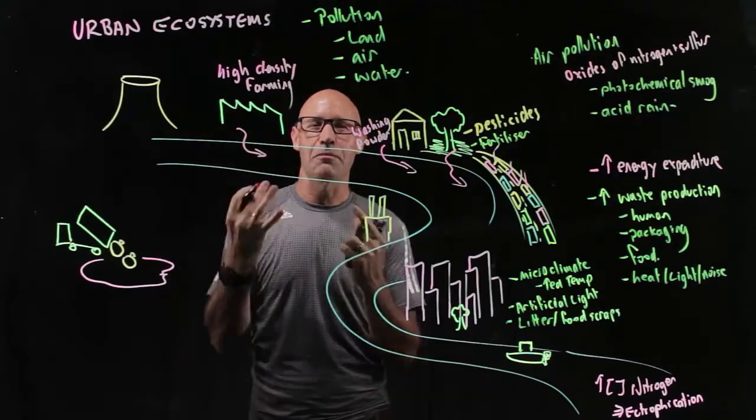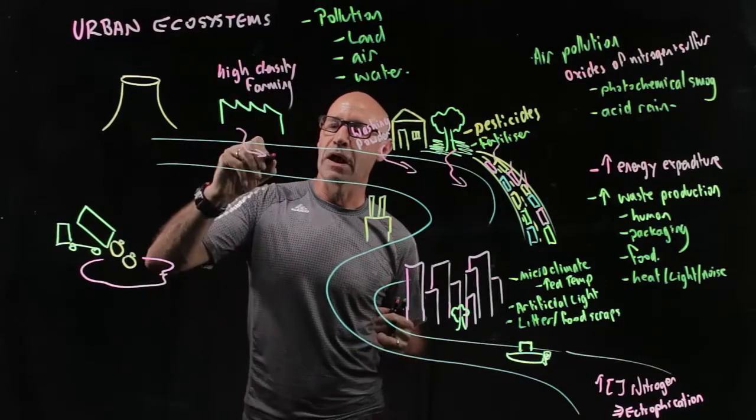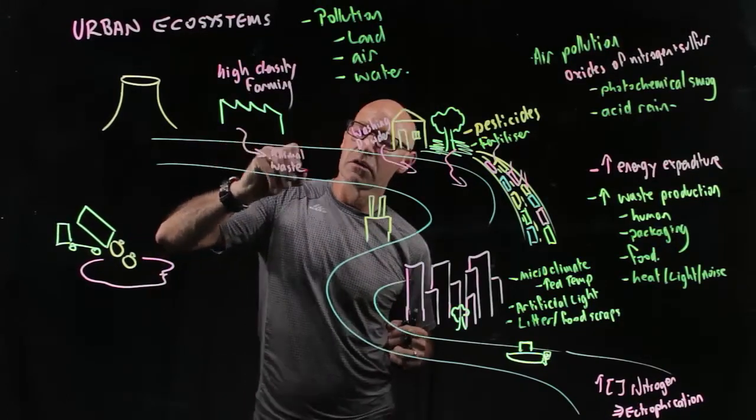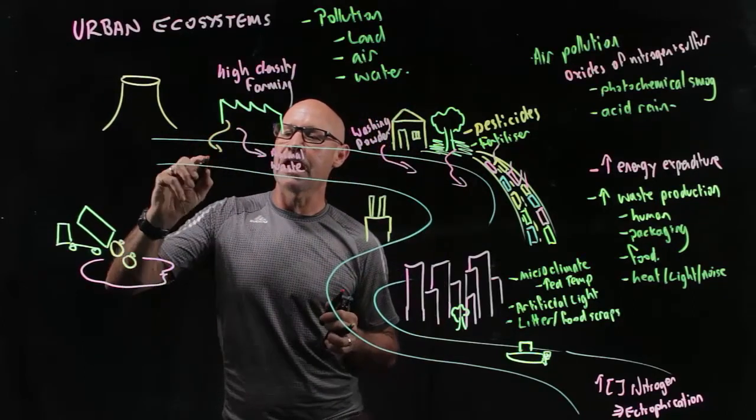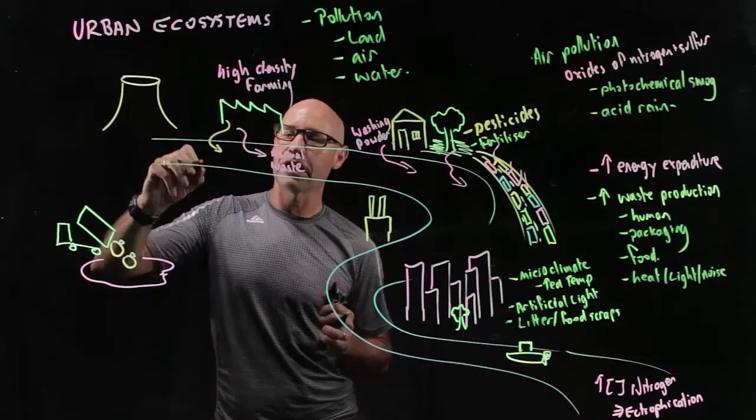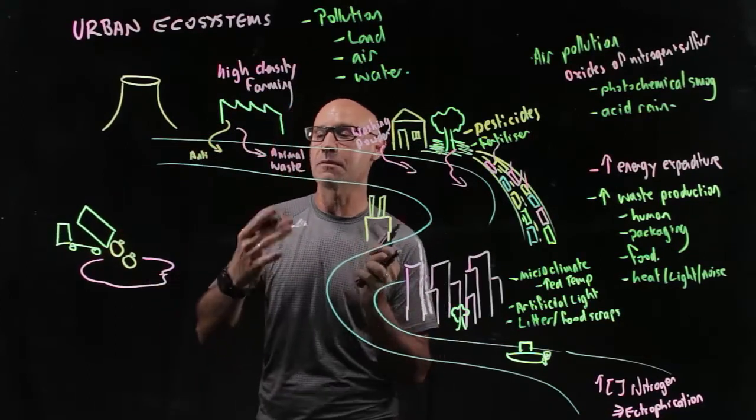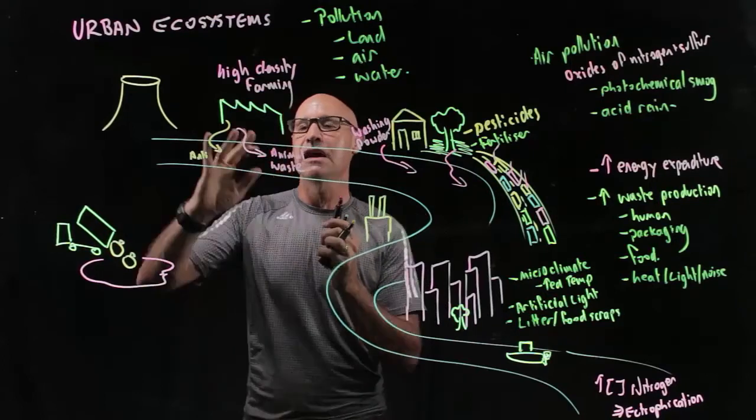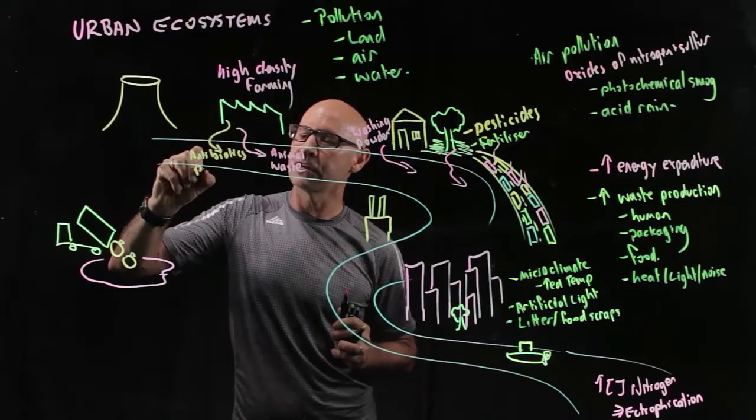So your ammonia waste, so the faecal and urine waste, so animal waste products. As well as that though, of course, there's a risk that the antibiotics and the pesticides that are fed to the animals to keep them healthy and get them to grow quickly, that can then also run off into our waterways. So antibiotics and pesticides.